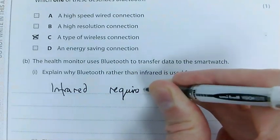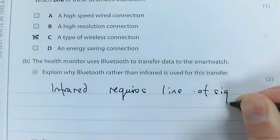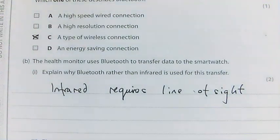The correct answer is infrared requires line of sight. If you think about your television when you're changing the channel, if there's something in the way of the remote, say your little brother or sister stood in the way of it, you're not going to be able to change the channel. Bluetooth, you don't need that. Now that's only one mark - infrared requires line of sight.